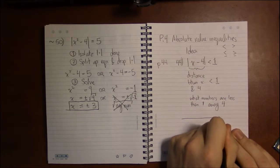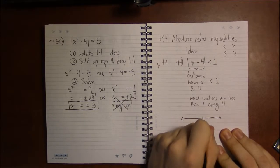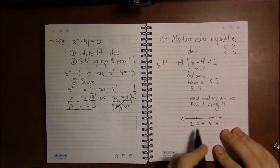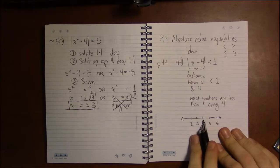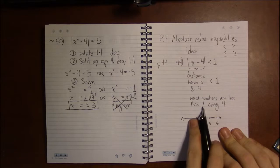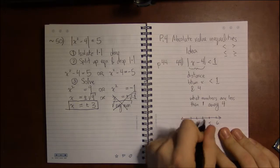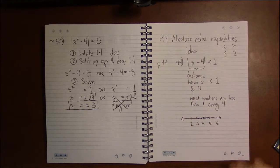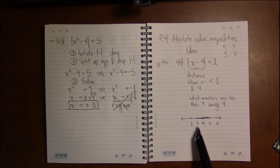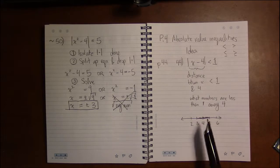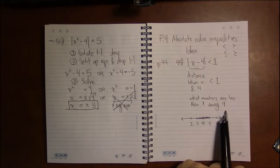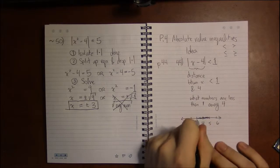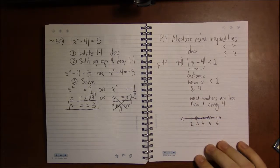So if we look at a number line, we're interested in the numbers near 4, near in the sense that they're no more than one unit away. That means everything between 3 and 5. But the question becomes: do we include 3 or 5? Well, 3 is exactly one away from 4, and exactly is not what we're going for — we're going for less than one away. So we're not going to include 3, and similarly we're not going to include 5.